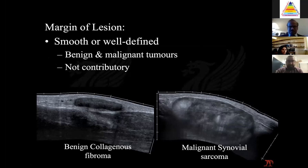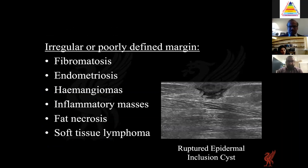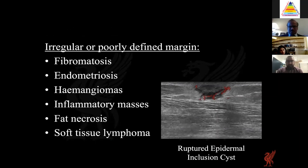Margin of the lesion can be smooth, well-defined, or ill-defined, and this can occur in both benign and malignant tumours — margins don't often contribute definitively to the final diagnosis. Irregular margins can occur in both benign and malignant lesions; in one case, biopsy-proven fibromatosis had an irregular margin, but the margin alone could not provide that diagnosis. You can limit your differential however — remember both benign and malignant lesions can have a poorly defined margin.